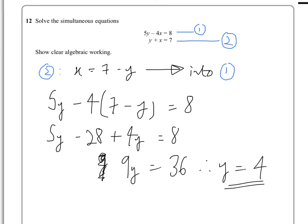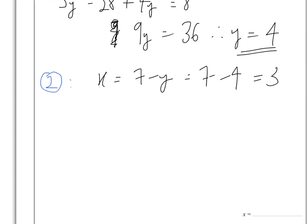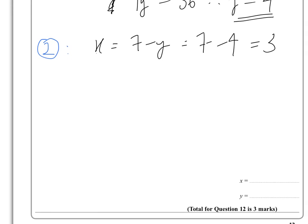then what we do is we substitute that into any of the two equations it doesn't matter which for ease I'm going to input it into equation 2 again because it's the easiest one to deal with so we've rearranged equation 2 into x equals 7 minus y which means it's 7 minus 4 which means it is 3 so we know therefore x is 3 and y is 4.